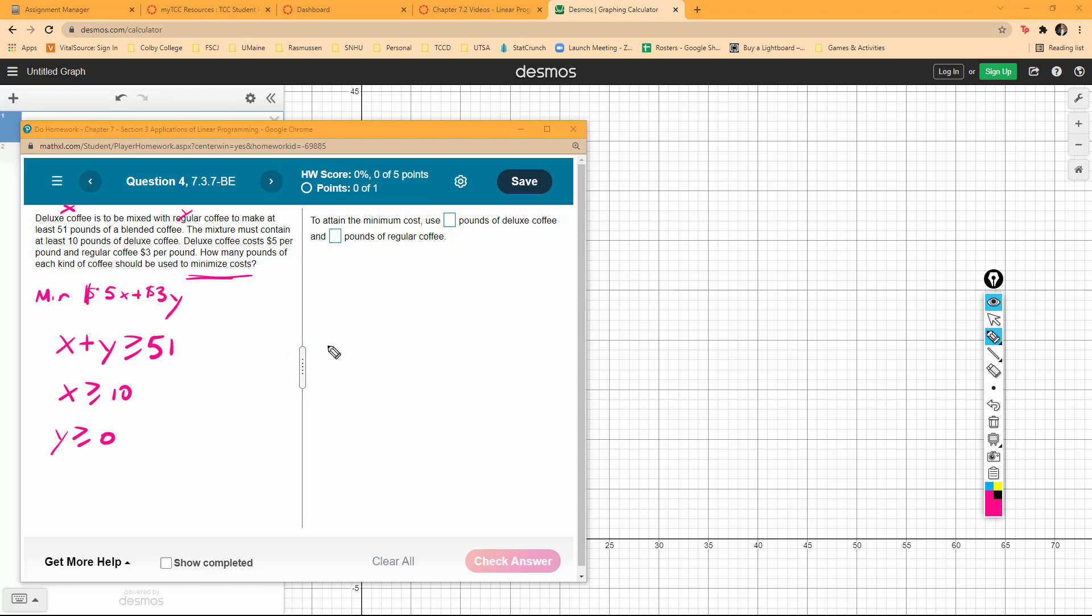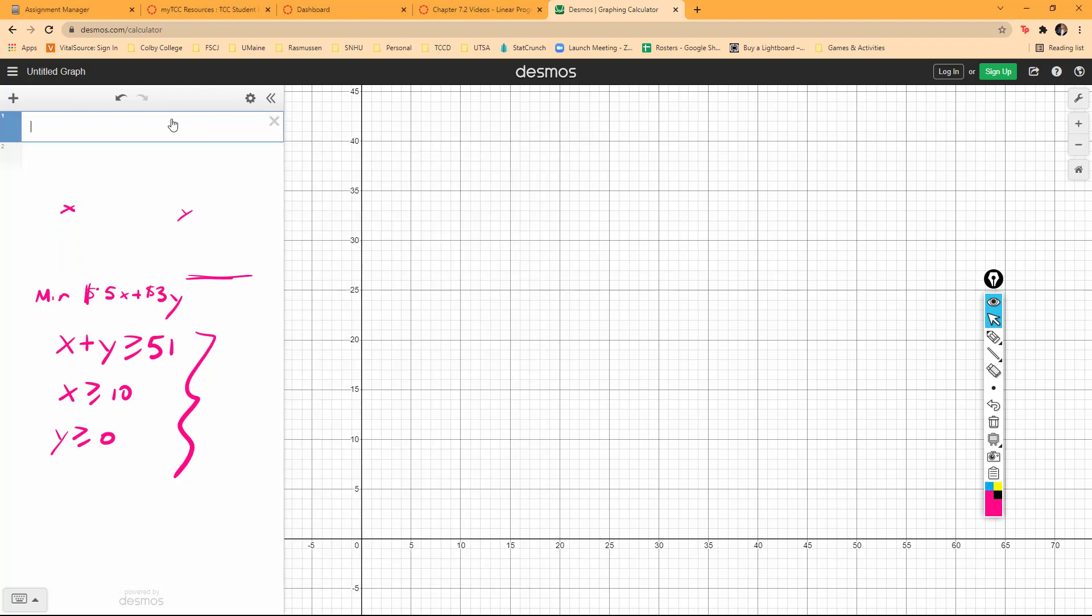Okay, so remember when you start working on these, this is what you're graphing - your constraints. Let's graph these. As I mentioned before, decimals are the way to go.